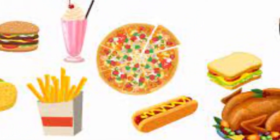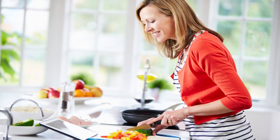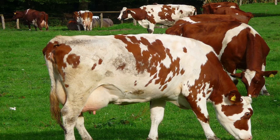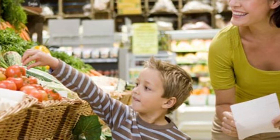All living organisms need food. Human beings can cook their own food. Animals hunt or graze the fields. Plants cannot move, but can make their own food.